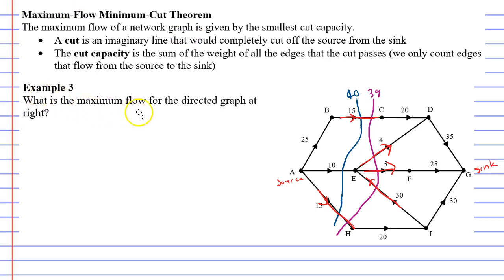So the maximum flow for the directed graph at right is 39. Now it doesn't give us any units to work with here. So we can just leave that as 39. Anyway, that concludes our video on example 3. Remember to read the description below for links to work booklets that relate to this video.